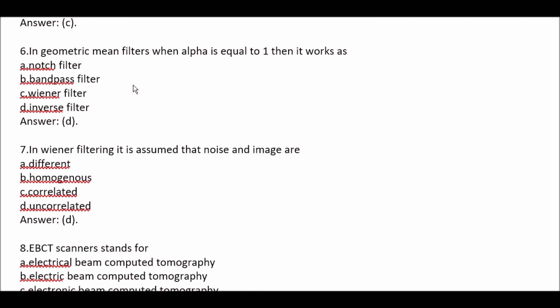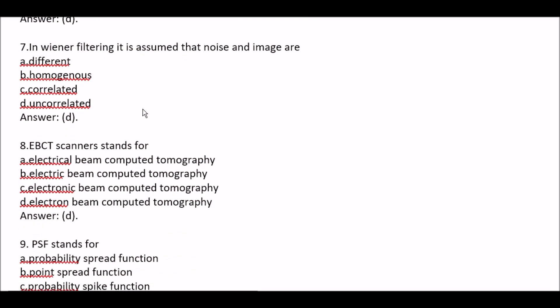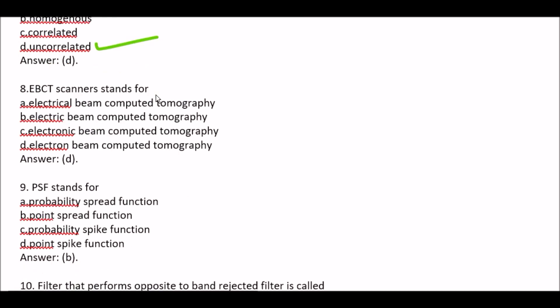Question 6: In Geometric mean filters, when alpha is equal to 1, then it works as — Option A Notch filter, Option B Band pass filter. Right option is Option D, Inverse filter. Question 7: In Wiener filtering, it is assumed that noise and image are — Option A Different, Option B Homogeneous, Option C Correlated, Option D Uncorrelated. Right option is Option D, Uncorrelated.